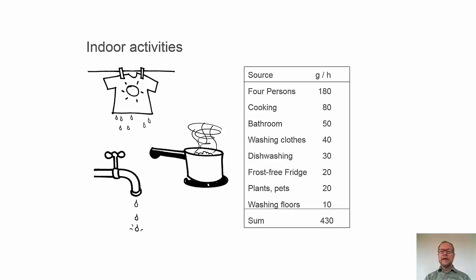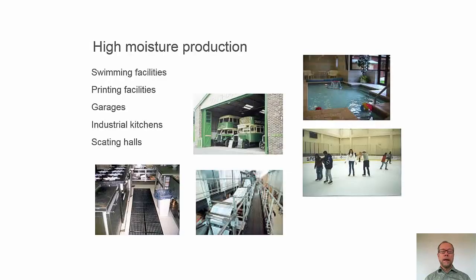And here, on the table here, we have some values, how much water vapor we are producing, like 4 persons could produce 180 g during an hour, cooking 80 g per hour, and so on. If we sum it up, we can very easily get 430 g per hour.